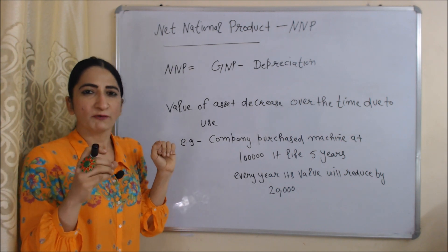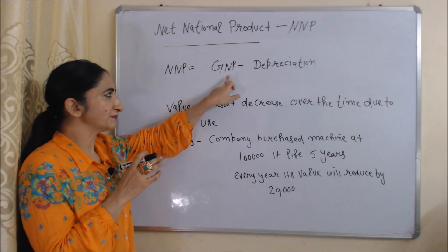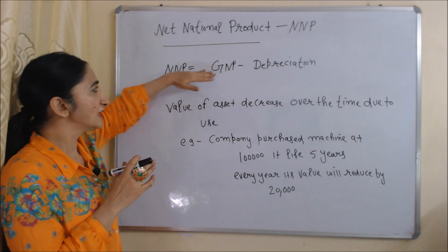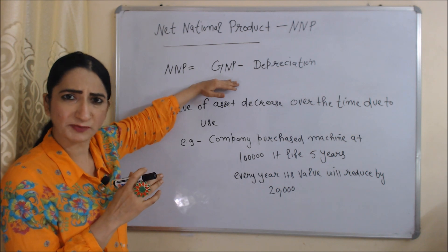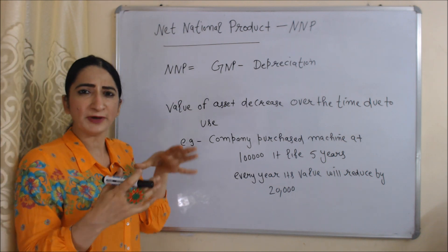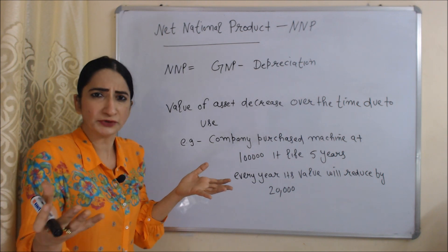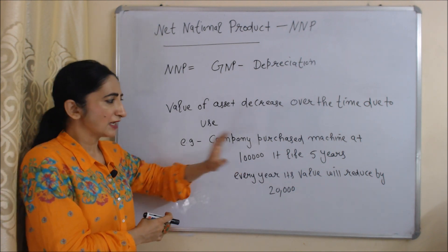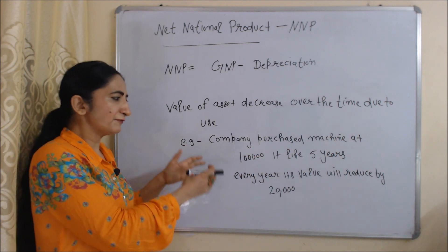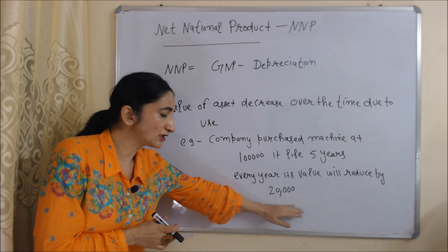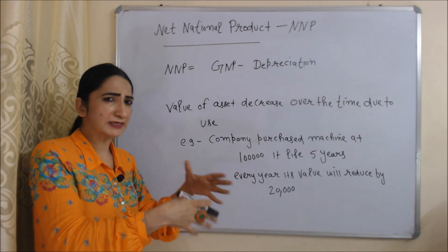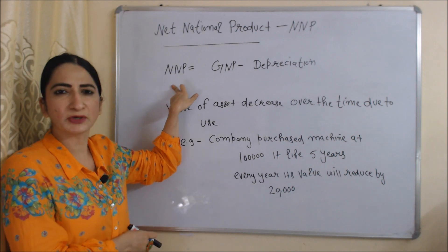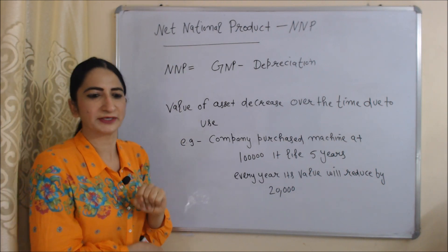Now we are going to talk about Net National Product — in short, NNP. Formula: NNP = GNP − Depreciation. When we subtract depreciation from GNP it becomes NNP. As we know, the value of an asset decreases over a time period due to use — this is called depreciation. For example, a company purchased a machine at 1 lakh rupees and the life of this machine is 5 years; every year its value reduces by 20,000 — this 20,000 is called depreciation.